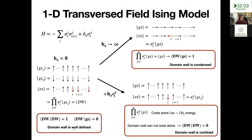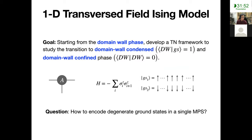This is a slightly different language from the transverse field Ising model that you are familiar with, but we're going to use this language throughout. We want to start from a phase where a domain wall is well-defined, and develop a tensor network framework to study the transition to the domain wall condensed and domain wall confined phases.